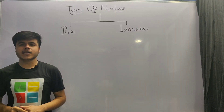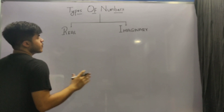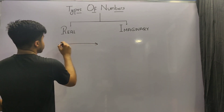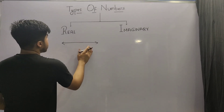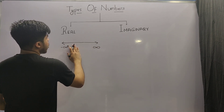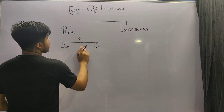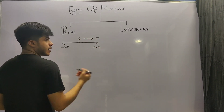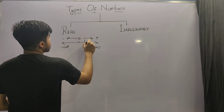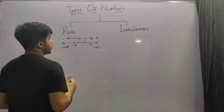Our next classification is between real numbers and imaginary numbers. Real numbers are those numbers which can be represented on a number line. A number line is a line which stretches from minus infinity to plus infinity, on which you can represent all the positive and negative numbers in sequence. The number line is divided at zero — numbers to the right are positive and numbers to the left are negative. All numbers like 1, 1.5, minus 3, and so on are real numbers which can be represented on the number line.